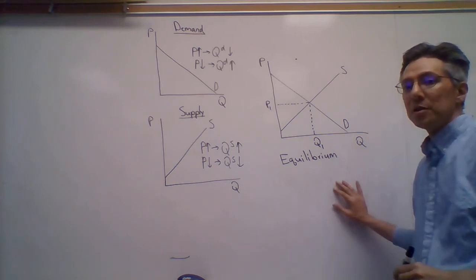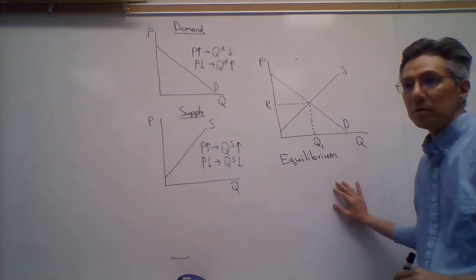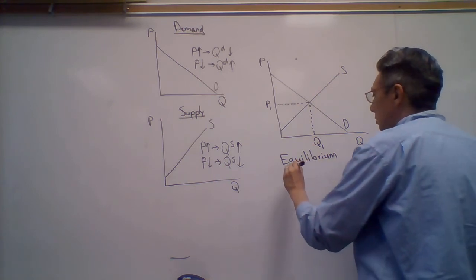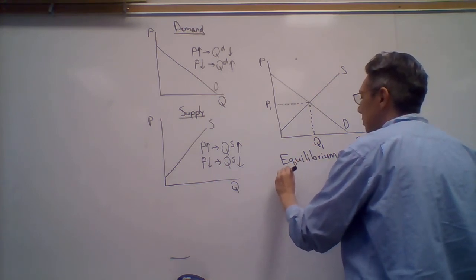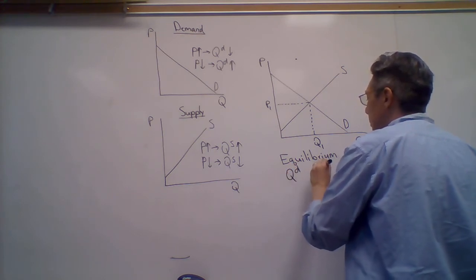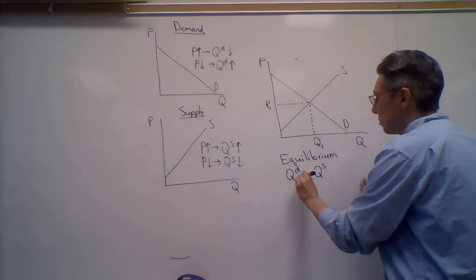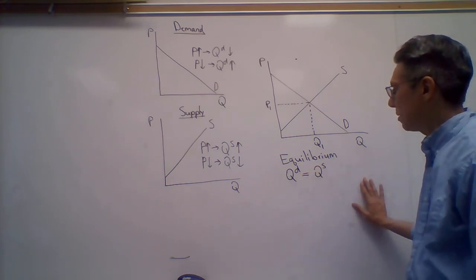And as I just said, basically what this is called is the equilibrium. So what happens particularly at the equilibrium? What's supposed to be the case is that we have the quantity demanded and the quantity supplied basically equal to each other.